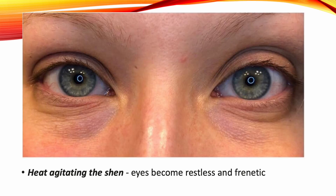When heat agitates the shen, it becomes restless and the person can be manic. Their eyes will become restless and frenetic. This is because hun follows shen in its entering and exiting. When shen is agitated and thereby overactive, hun is forced to follow its movements. This results in eyes that are constantly shifting their point of focus in the room.